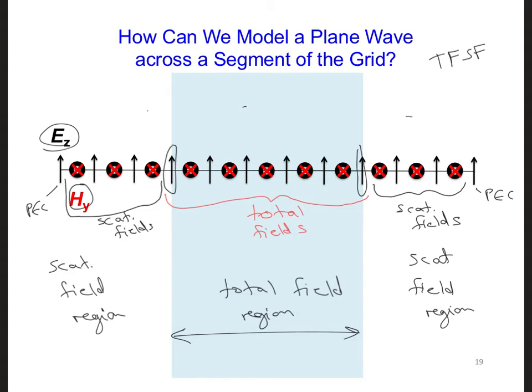Well, we could define three different arrays for EZ and three also for HY, but all that does is make the implementation of the plane wave more tedious. Since the total and scattered fields don't overlap at all, we can still get away with using a single EZ array and a single HY array across the entire grid.